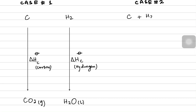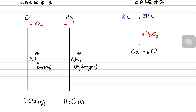In case two I started with pure carbon and pure hydrogen but made ethanol out of them first. So instead of making carbon dioxide directly, in the second scenario I used these reactants to make ethanol, C₂H₆O. The equation requires two carbons, three hydrogens, and half a mole of oxygen as well. The enthalpy for this step is the standard enthalpy of formation for ethanol.